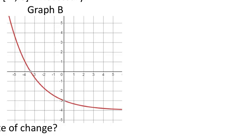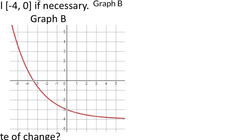Now graph B, which is exponential, so we use the interval [negative 4, 0]. Same slope formula: x on the bottom, y on the top. Starting with x = negative 4: I find it on the horizontal number line and follow up to the red line. The x-value is negative 4, and following that line over to the y-axis shows a y-value of 1. So my ordered pair is (negative 4, 1): negative 4 on the bottom, 1 on the top.